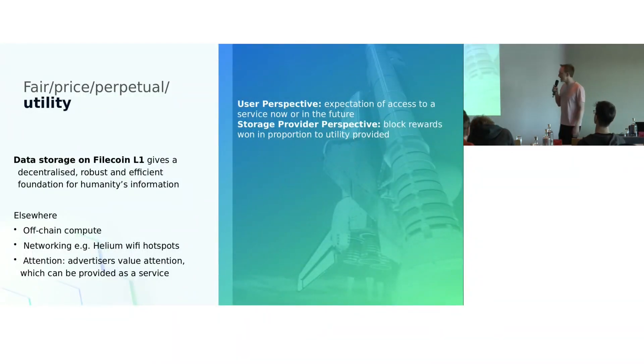So first of all, utility. What we're talking about here from the user perspective is the expectation that we're going to get something at some time in the future. From the perspective of the storage provider or the network, this is what block rewards are earned for in proportion to the utility that's supplied. I work as a long-term collaborator with Protocol Labs, so I'm particularly interested in Filecoin, which is an L1 that provides storage as a utility. But more generally, you can also think about off-chain compute, which is also coming to Filecoin, but also other things, for example, networking or perhaps even attention.